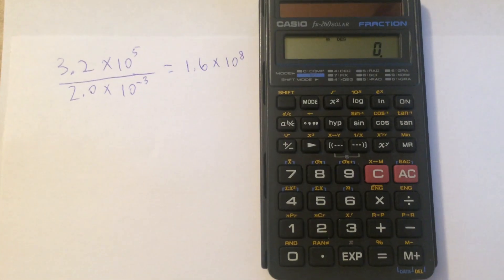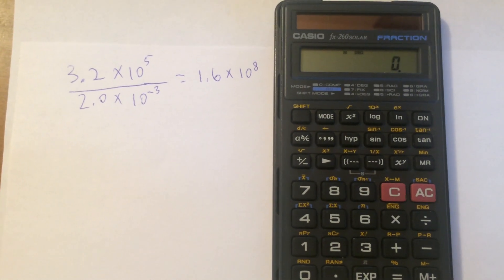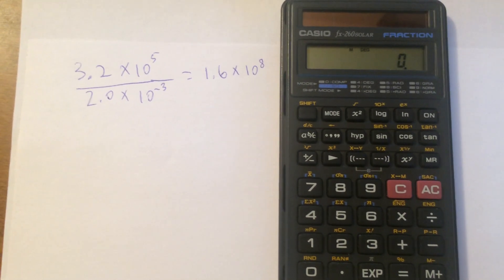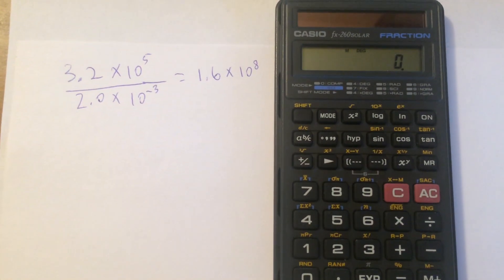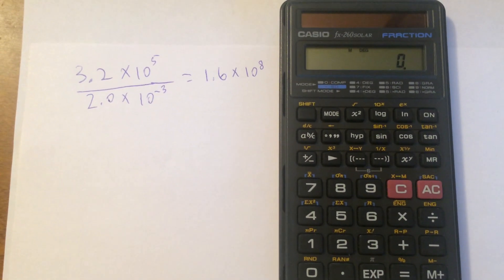I've got here a Casio FX260 solar calculator. Other calculators will work similarly, but the keys will be slightly different. And you'll notice I've written a problem up here in the left involving two numbers in scientific notation.